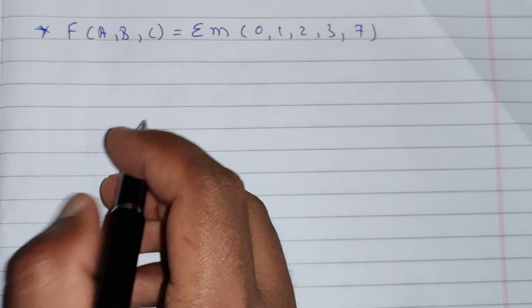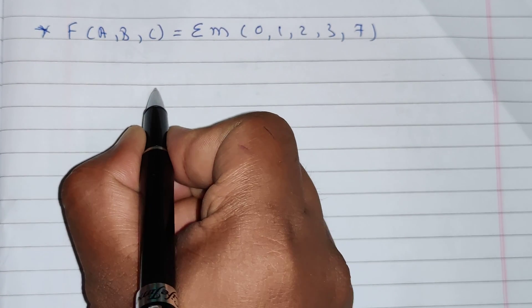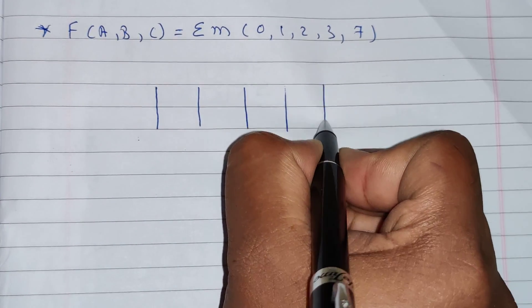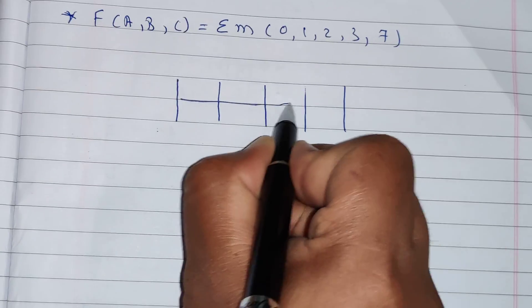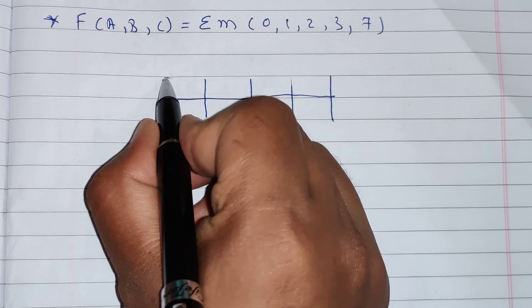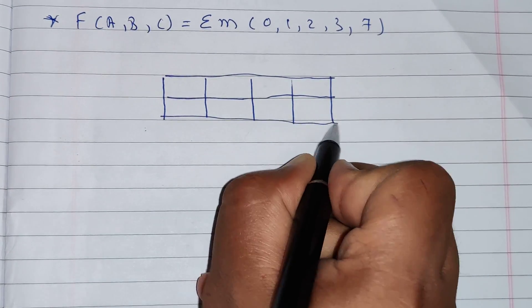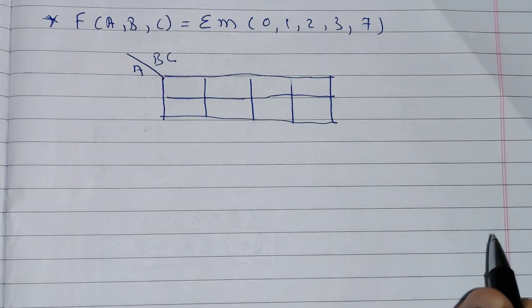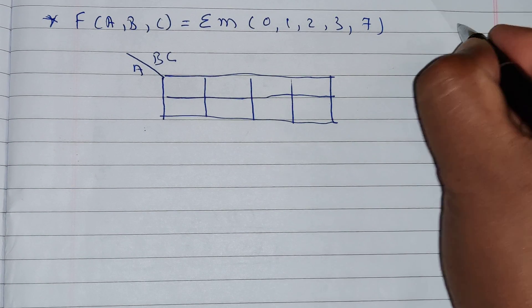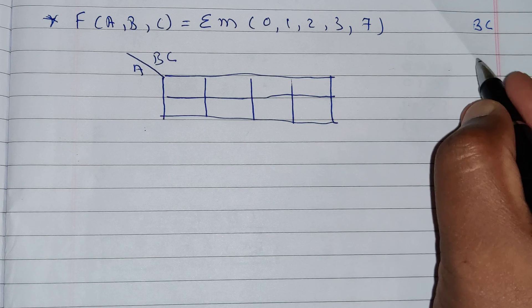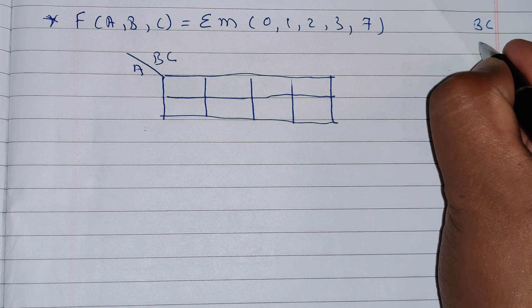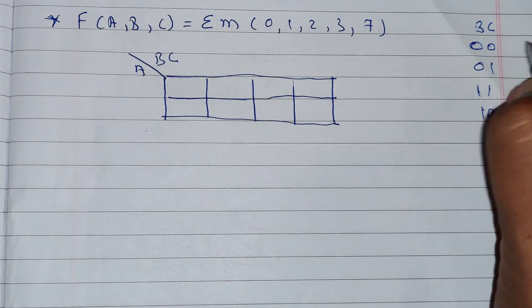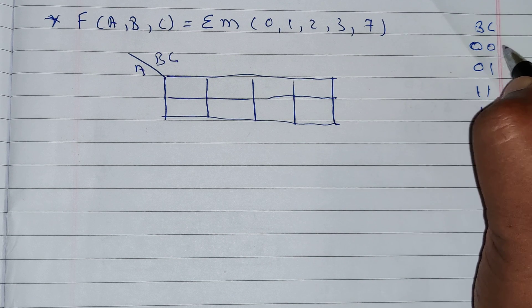The three variables are A, B, and C. For a three variable Kmap, we draw a box with four columns and two rows. The variables are A and B along one axis, and C along another. B and C in Gray code are written as: 00, 01, 11, and 10 — these are the four possible Gray code values.